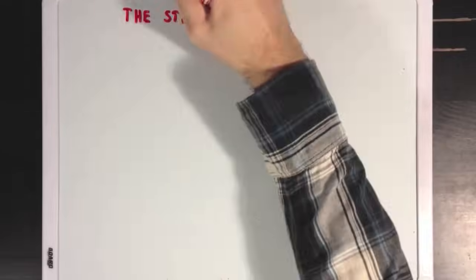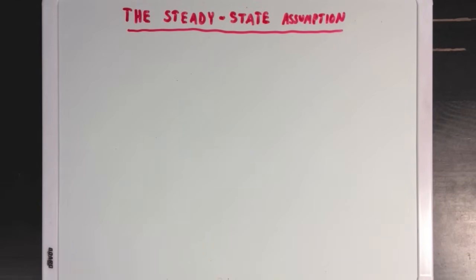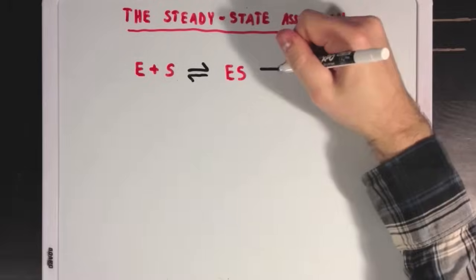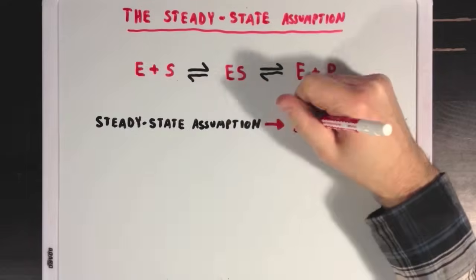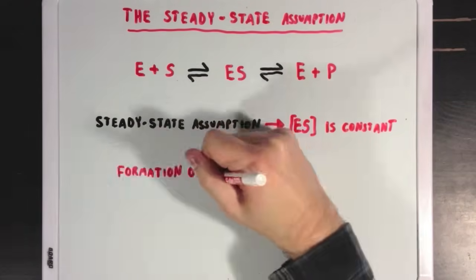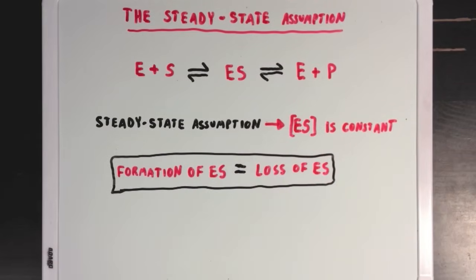So first, we'll talk about the steady state assumption, and what that means. Like I said before, there are two steps to an enzyme's catalysis. Now, when we use the term steady state, what we mean is that we're at a point where the concentration of ES, or enzyme substrate complex, is constant. Which means that the formation of ES is equal to the loss, or dissociation of ES.